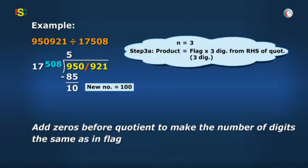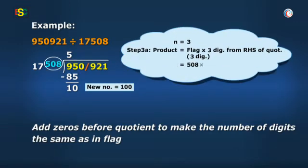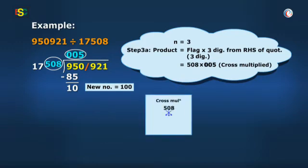So, it is 508 cross multiplied by 005. Here, I have added two zeros before quotient obtained till now. This gives 25 plus 0 plus 0 equal to 25, which ends step 3a.